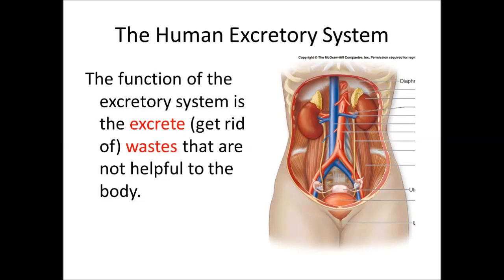What is the human excretory system? The function of the human excretory system is to excrete or get rid of the waste products that are not helpful to the body. The by-products are produced by different biochemical processes like digestion, absorption and other processes in the body. These waste or harmful by-products must be eliminated out from the body. Due to this reason, the excretory system is very vital in the human body.